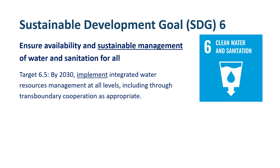SDG 6 is to ensure availability and sustainable management of water and sanitation for all, but it covers much more than water supply and sanitation. The goal covers all aspects of water resources management and cuts across social, economic and environmental dimensions of sustainable development. Goal 6 is essential for meeting other goals, such as those on food and energy security and biodiversity.